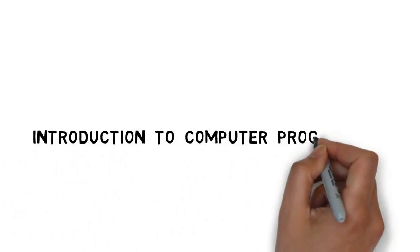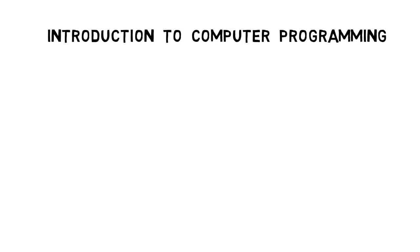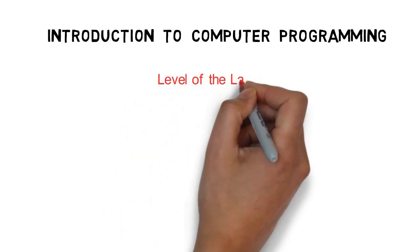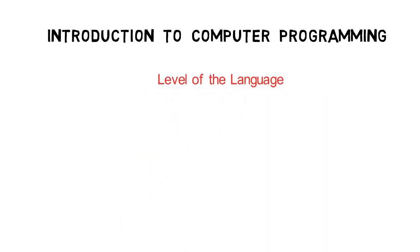In this video, we will discuss computer programming languages. When we talk about computer programming languages, we generally talk about the level of the language. The level basically specifies the amount of abstraction between the programming language and machine.